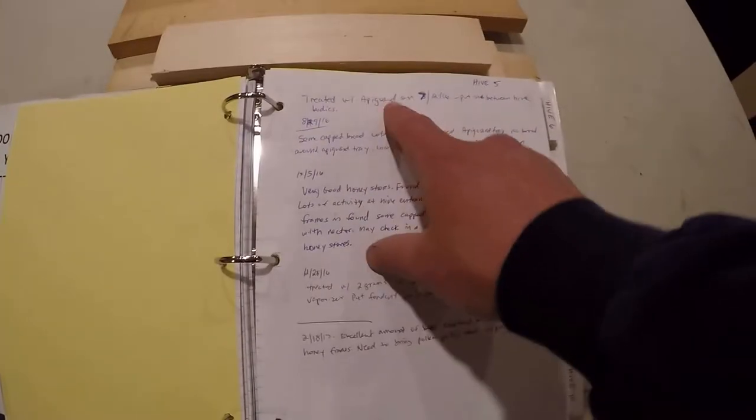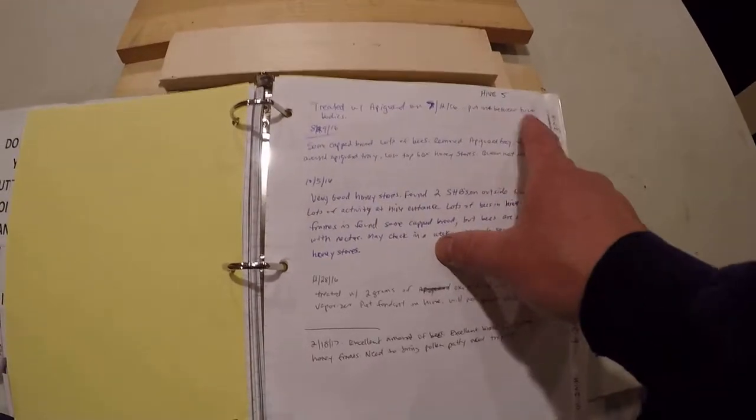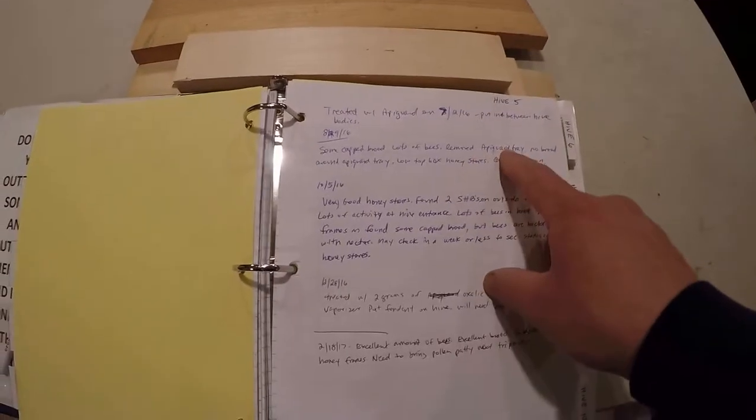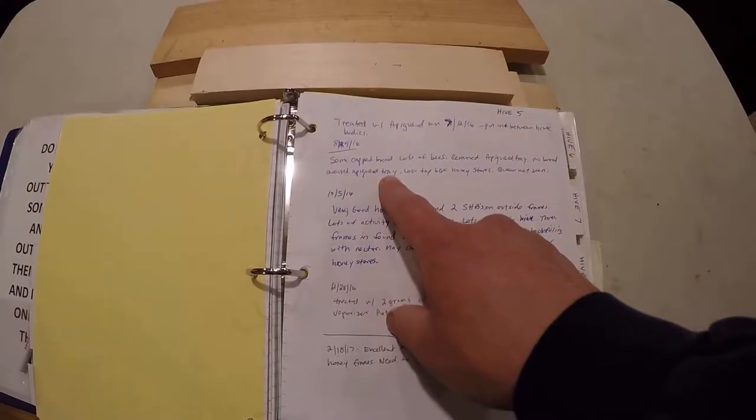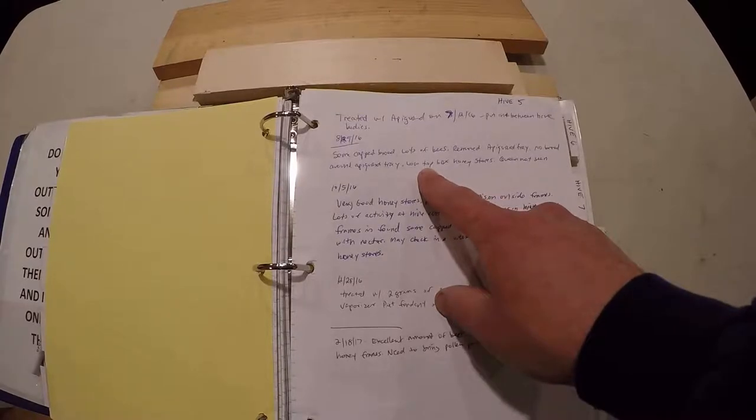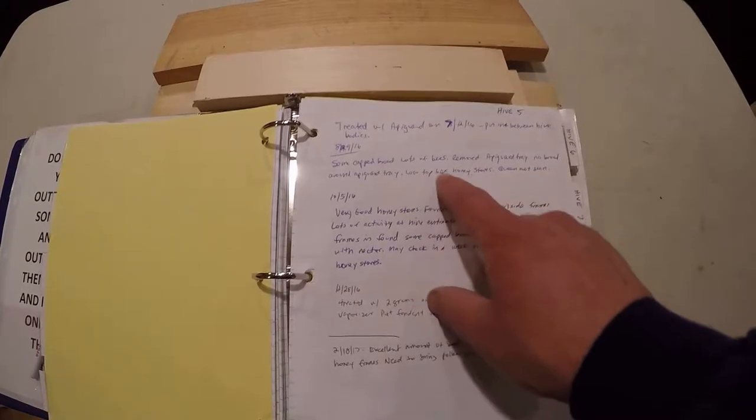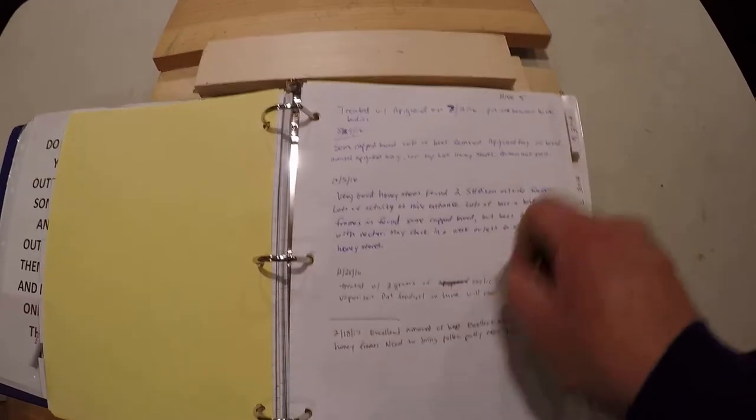Hive 5, treated with ApiGuard on 7/12, put between hive bodies. August 29th, some capped brood, lots of bees, removed my ApiGuard tray I had in there still, no brood around the ApiGuard tray. Top box, low honey stores in the top box. I didn't see the queen.